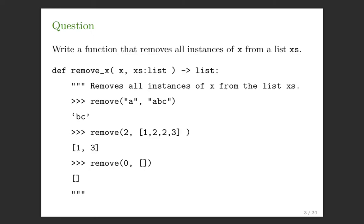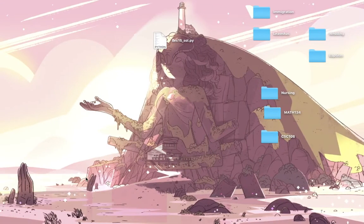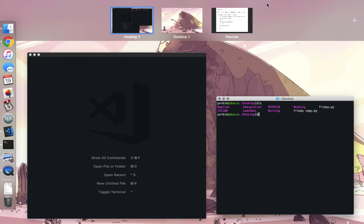Our first question today: write a function that removes all instances of x from a list xs. If I remove A from [A, B, C], I want to get [B, C]. If I remove 2 from [1, 2, 2, 3], I should get [1, 3]. And if I remove 0 from empty, I get empty back — if you remove anything from empty, you get empty back.